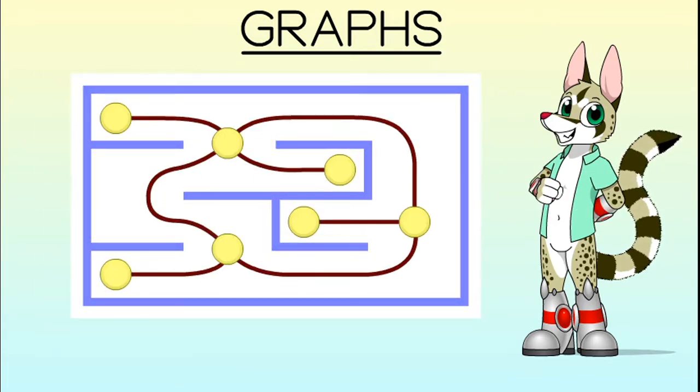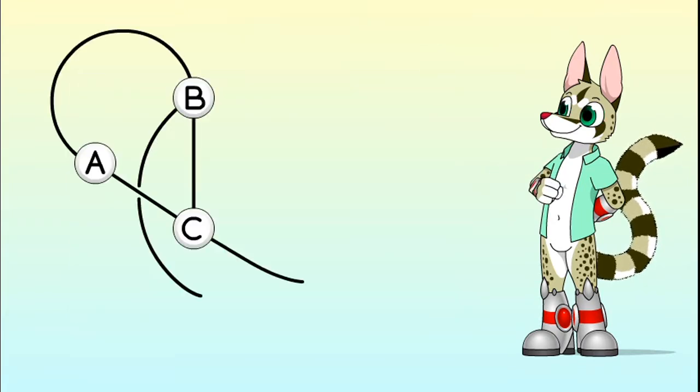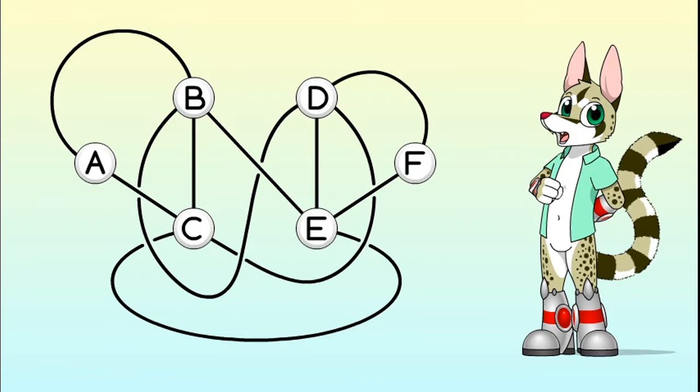As you might guess, a graph makes a rather tidy representation of a map so we can use them as such in mobile robotics. Let us assume for now that the map we give our robot is indeed a graph. Finding a route between two locations looks quite simple now, doesn't it?